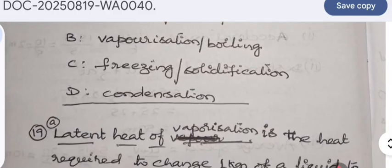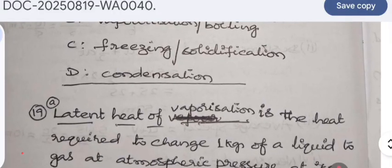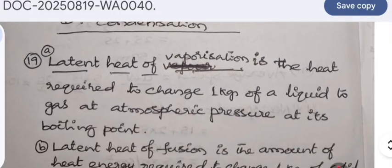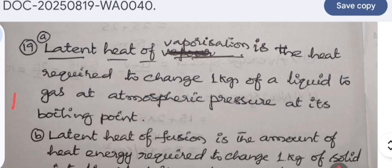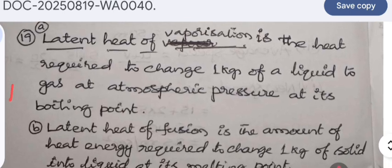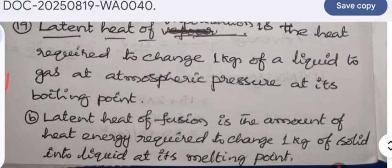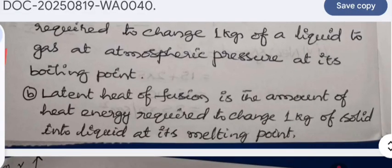In Section C, question 18: A is melting point or fusion or liquefaction, B is vaporization or boiling, C is freezing or solidification, and D is condensation. Question 19: Latent heat of vaporization is the heat required to change one kilogram of a liquid to gas at atmospheric pressure at its boiling point. Latent heat of fusion is the heat required to change one kilogram of a solid to liquid at its melting point.